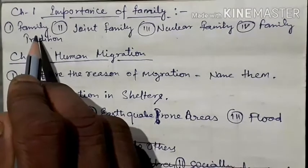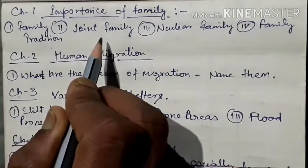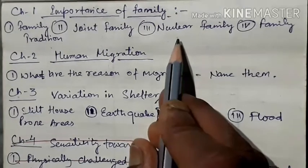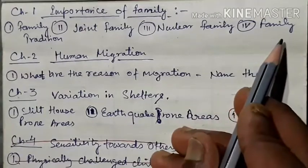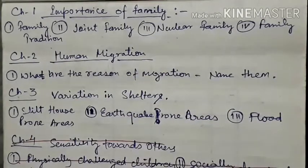Family — it is the first learning place of a child. Joint family — where mother, father, children, grandfather, grandmother, uncle, aunt, and siblings live together. Nuclear family — only mother, father, and their children. Family tradition — the customs and rituals followed by the family.